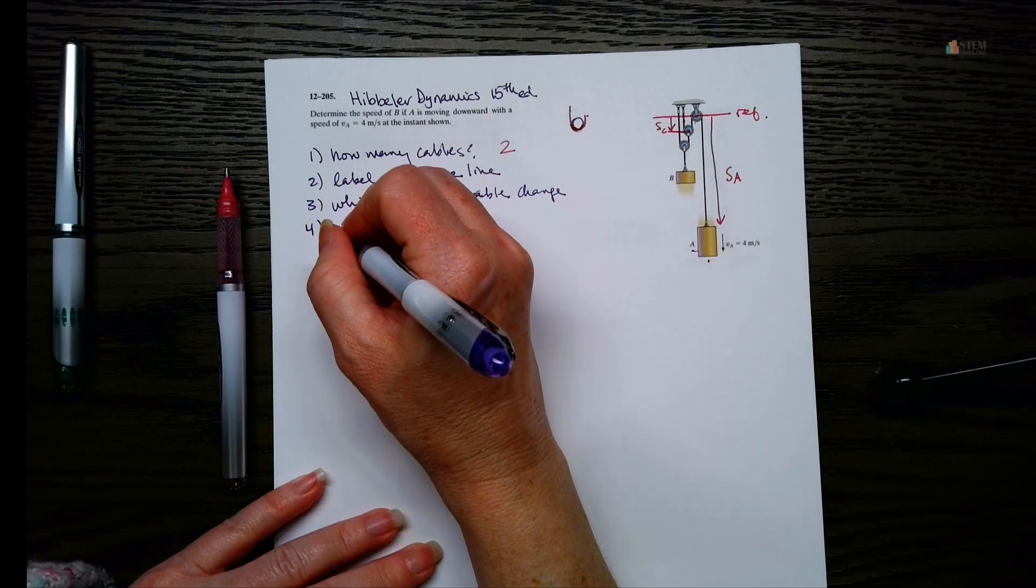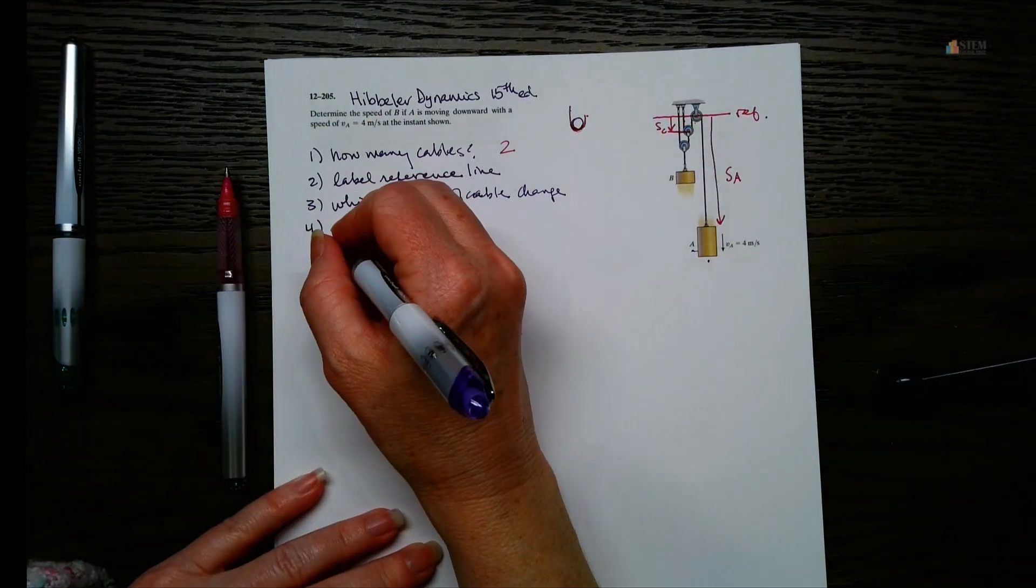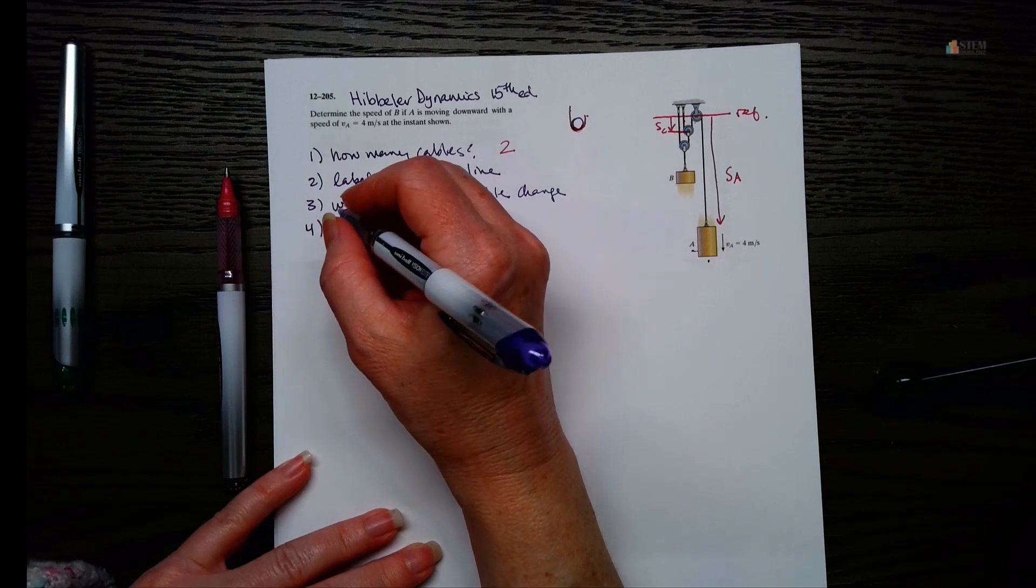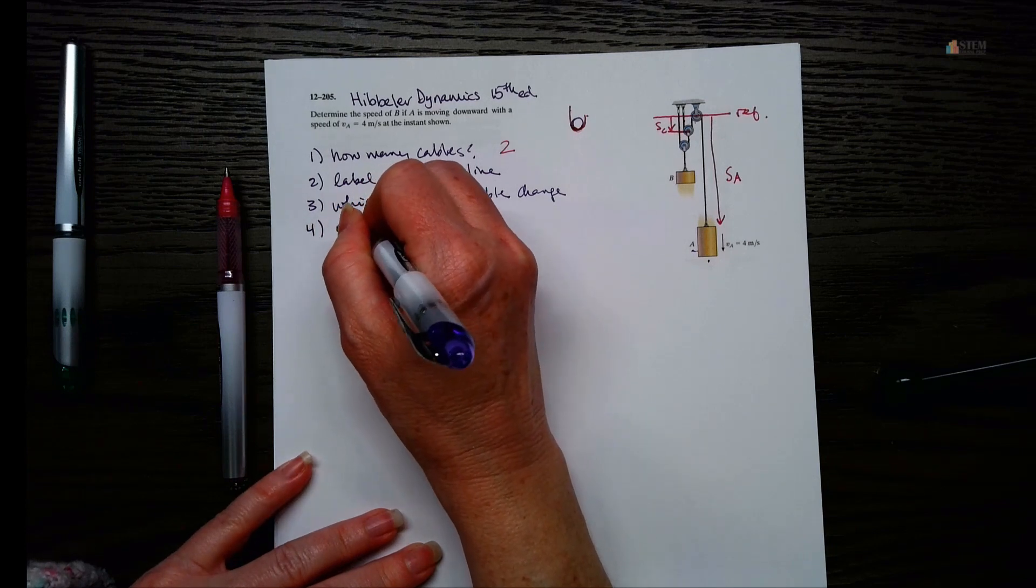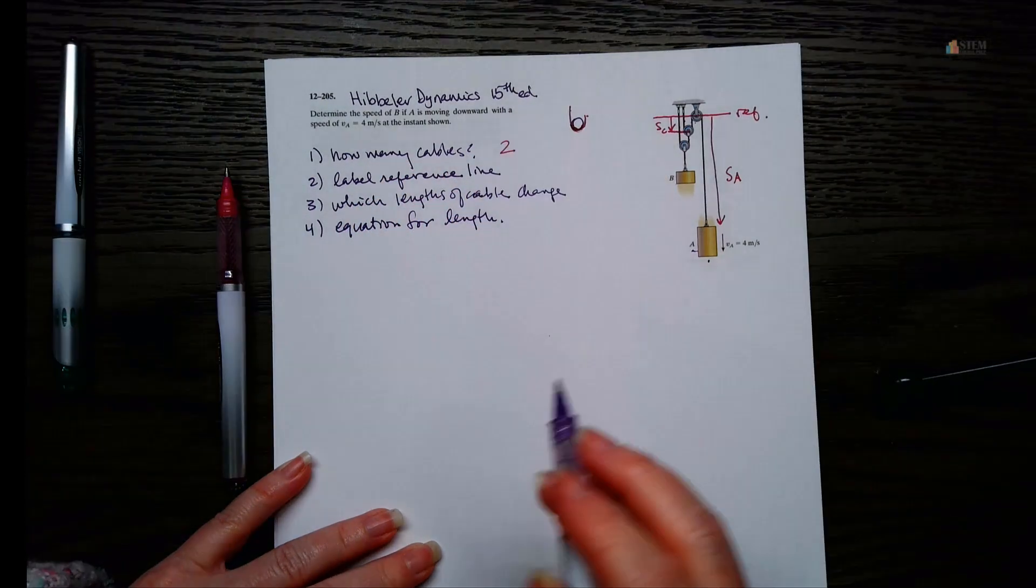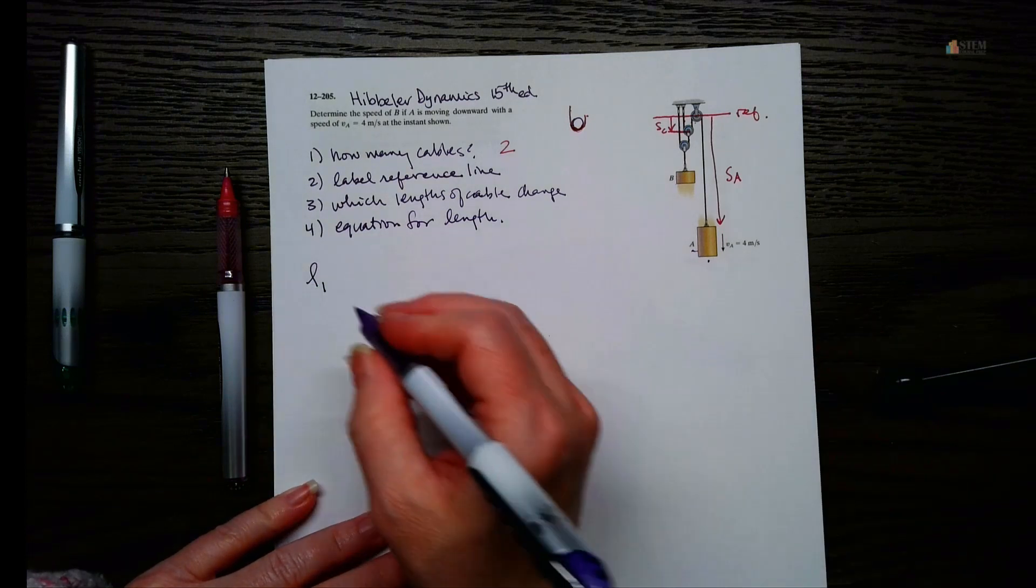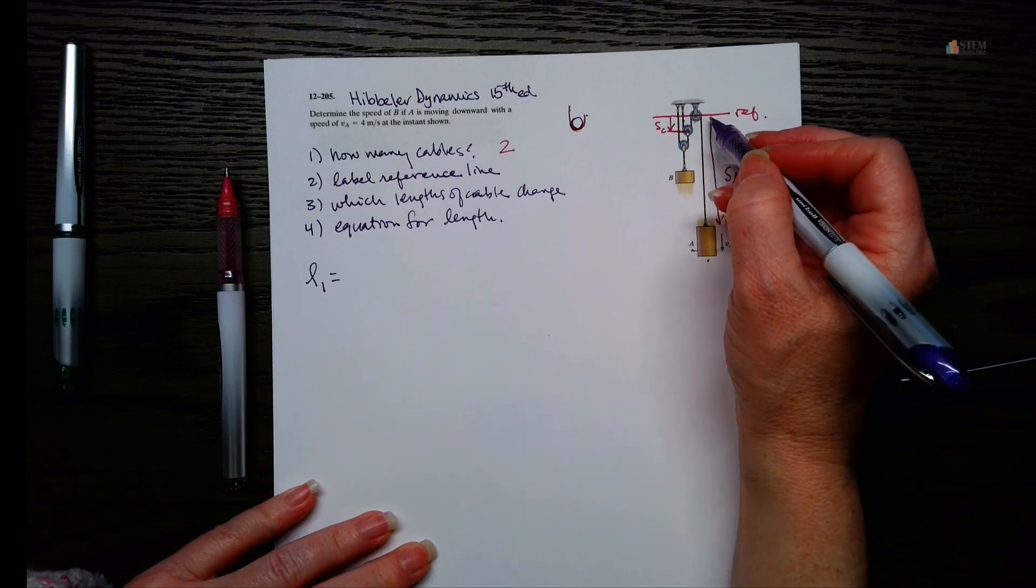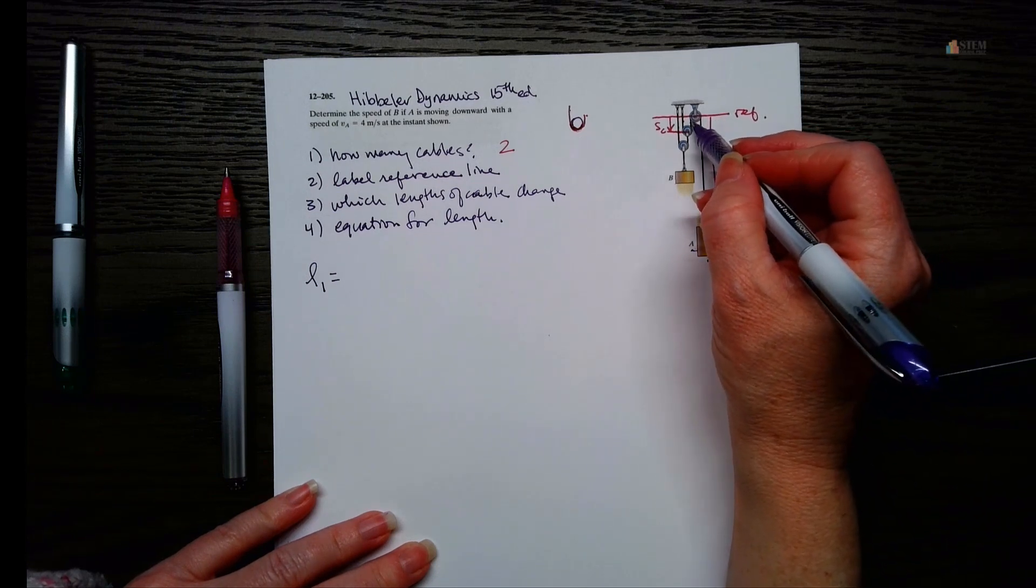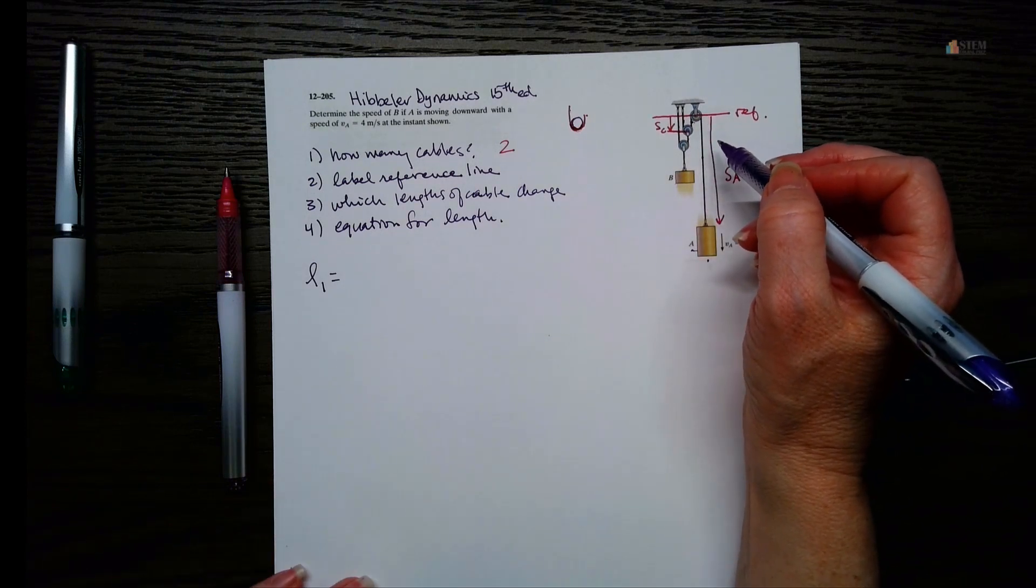So step four, after we label the lengths of cable that are changing, we need to come up with an equation that represents the total length. Alright, so equation for the length. So let's do that. So let's call this cable one, and I'm looking at the lengths that are changing. So I've got this SA, and then I've got these two right here.